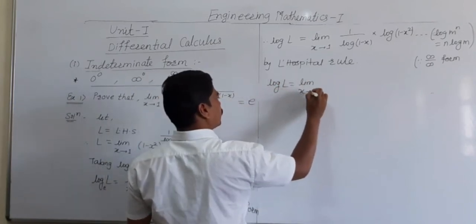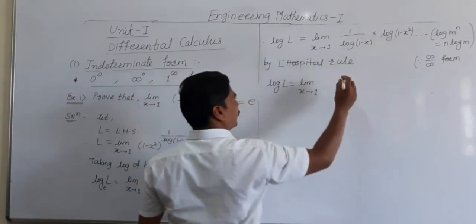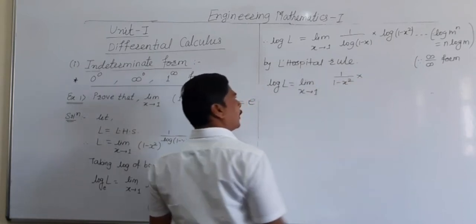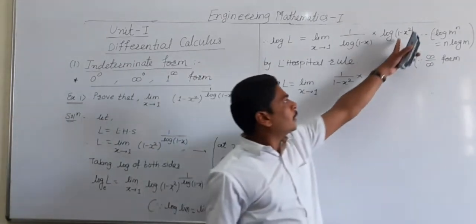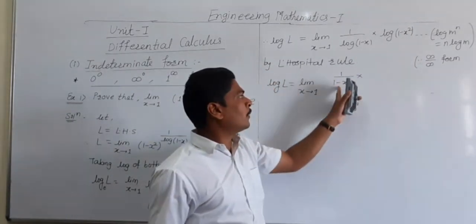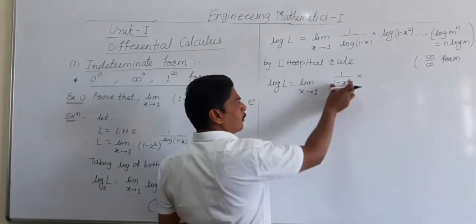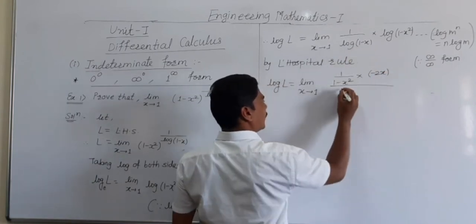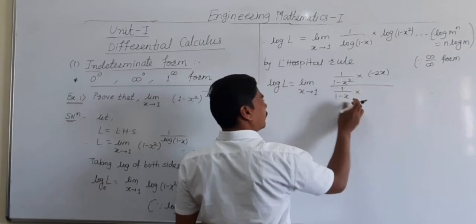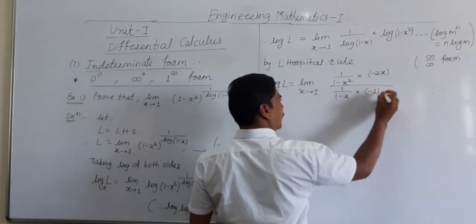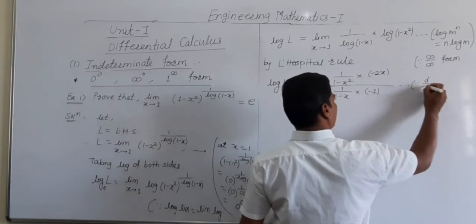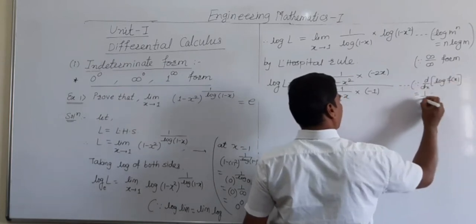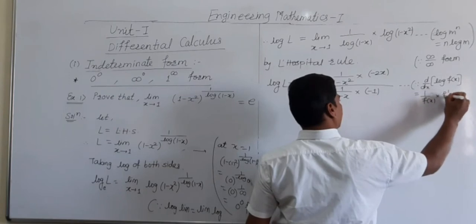By L'Hôpital's rule, log L equals limit x tends to 1. Taking the derivative of the numerator: derivative of log(1 minus x) squared is 1 upon (1 minus x) squared, multiplied by the derivative of (1 minus x) squared which is minus 2x. Similarly, derivative of log(1 minus x) in the denominator is 1 upon (1 minus x) multiplied by minus 1. Using the formula d/dx of log f(x) equals 1 upon f(x) times f'(x).